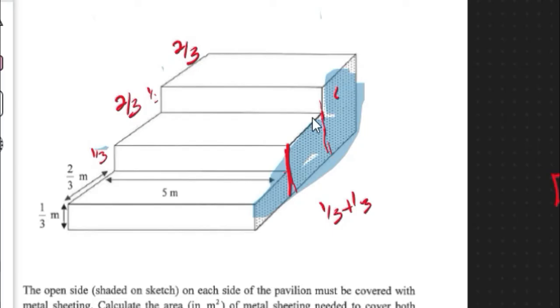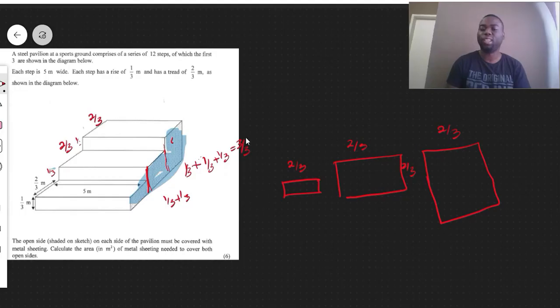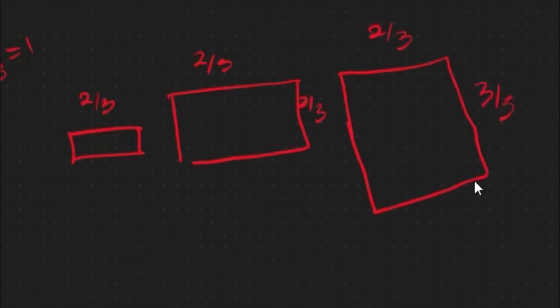And the same thing would happen for this one over here too. So it would be 1 over 3 plus 1 over 3 plus another 1 over 3 which would give you 3 over 3, which is the same thing as 1. But let's leave it as 3 over 3 for now. So this height here is 1 over 3, and this height here would now be 3 over 3.